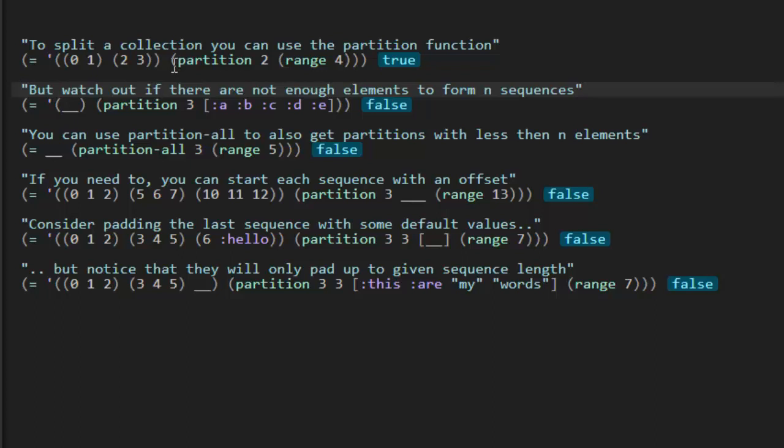Okay, next. But watch out if there are not enough elements to form n sequences. I think that's a typo. Form sequences of n. Or maybe we can just say, not enough elements to form the final list of size n. Maybe we can say that.